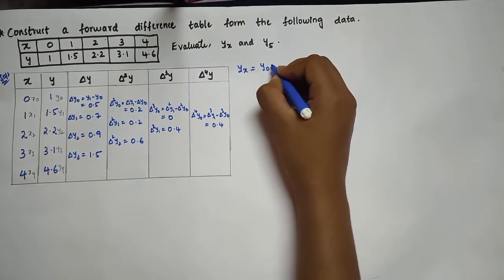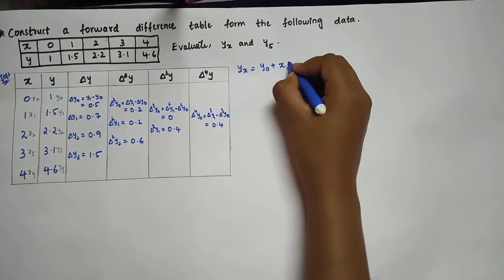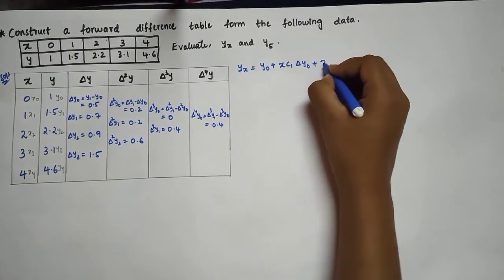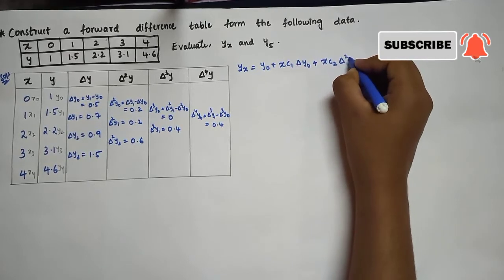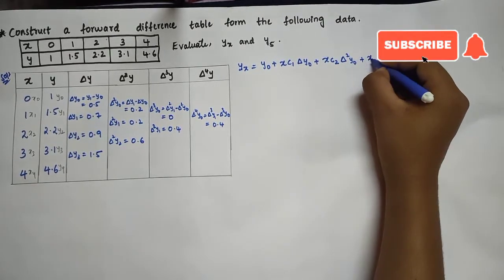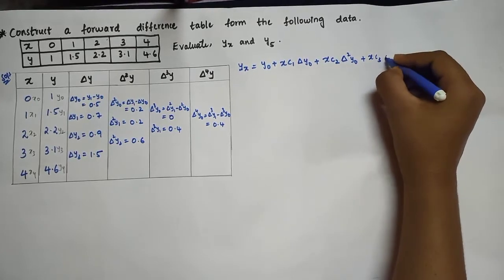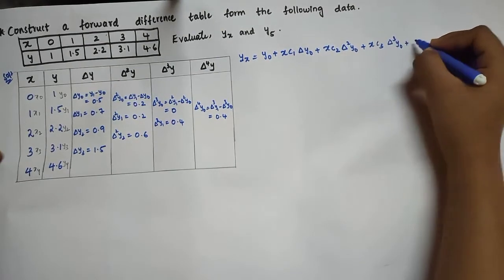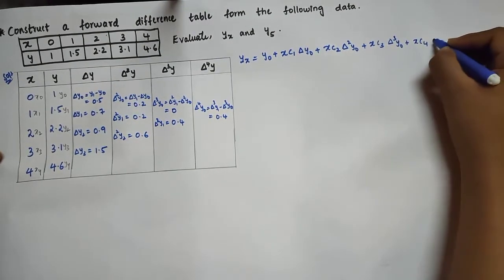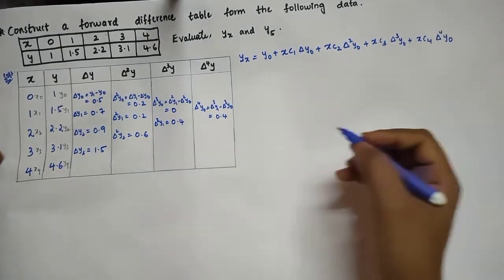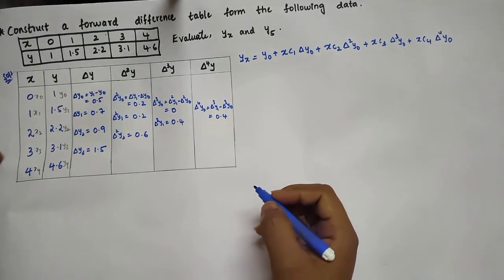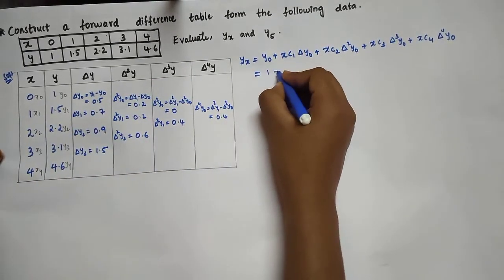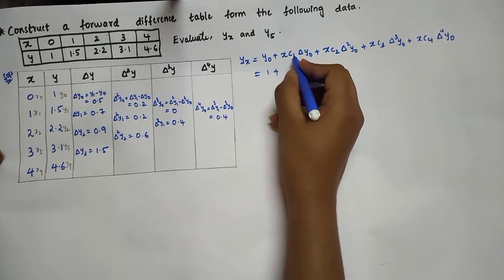The Newton's forward interpolation formula is: y(x) = y₀ + xC1·Δy₀ + xC2·Δ²y₀ + xC3·Δ³y₀ + xC4·Δ⁴y₀. Now substitute the values. y₀ = 1, so write 1 here.